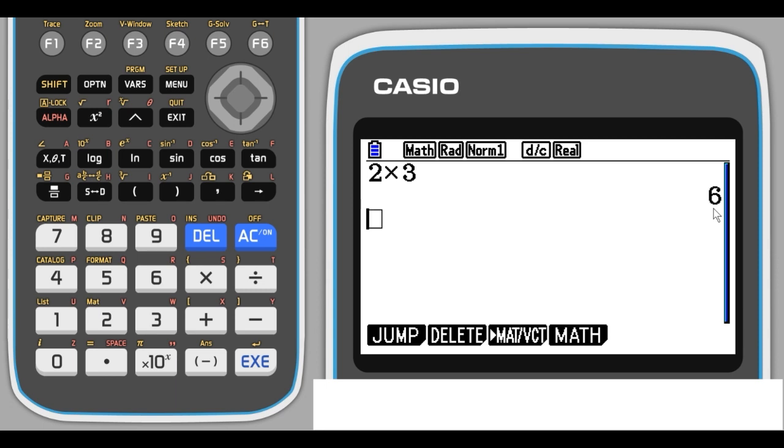I just want to show you one more feature of the Run Matrix menu option. Say you had to work out the perimeter of a rectangle, and you knew you were going to have to do this for a lot of different sized rectangles. You need to know the length and the width of that rectangle.